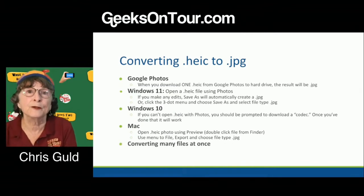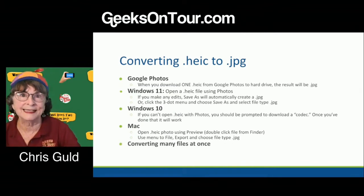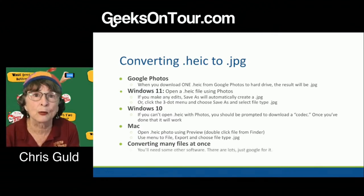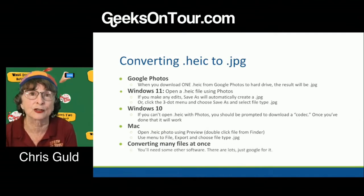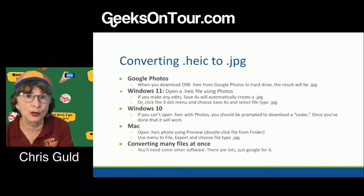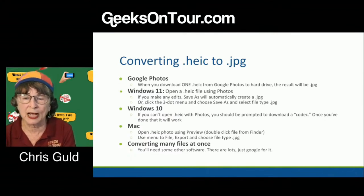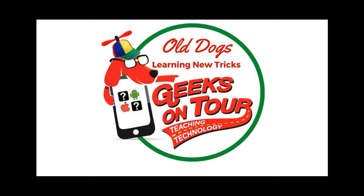If somebody sent you a pile of HEIC files and you need them in JPEG — for example, WordPress cannot use HEIC files in my experience; if you try to add an HEIC file to a WordPress webpage it says it doesn't know what the file is — then if you need to convert many files at once, you'll need some other software. There are lots of them, including free ones. Just Google 'convert HEIC to JPEG.'